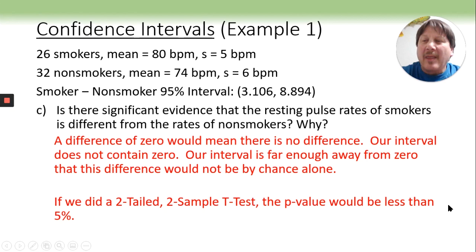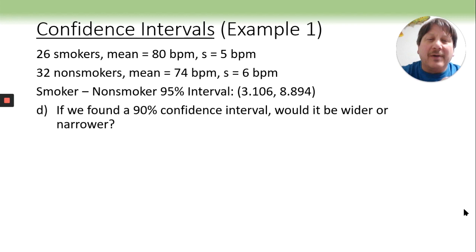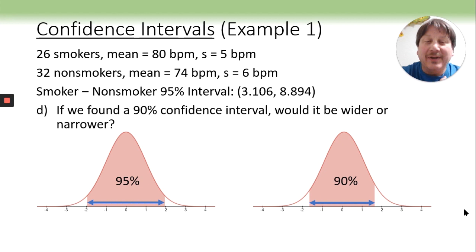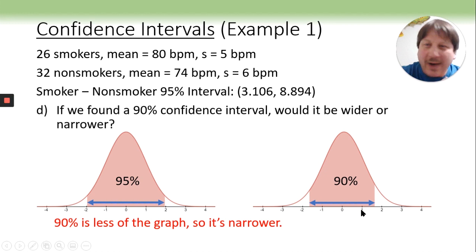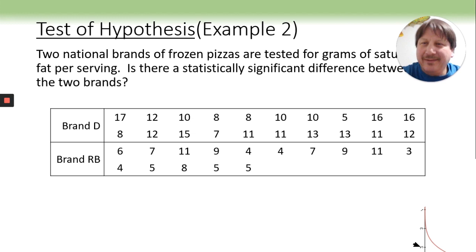Okay, the last one is, if we found a 90% interval, would it be wider or narrower? I think this is just an obvious question, but I still get people that miss it. There's 95% interval. There's a 90% interval. Well, 90 is not as wide. It is not as much of the graph as 90%. So it would be narrower. It doesn't matter what kind of an interval you're doing. A 90% interval is always narrower than a 95%.